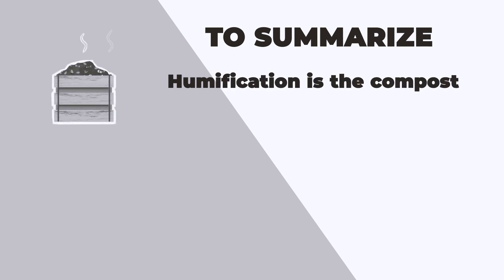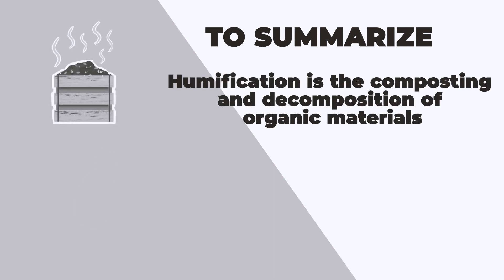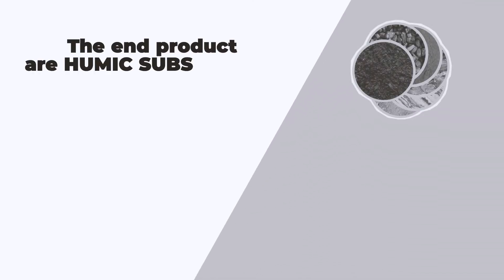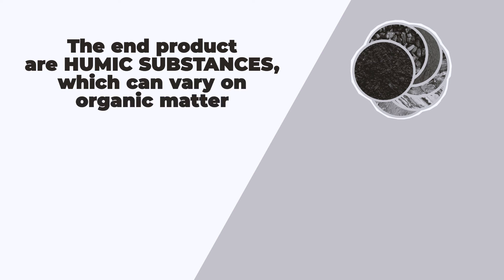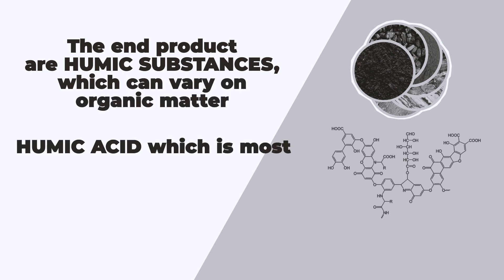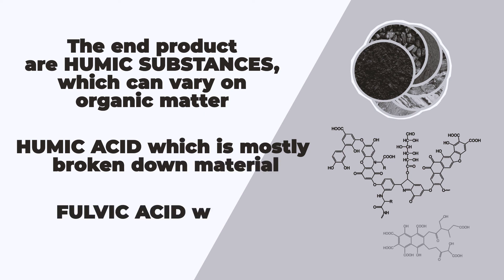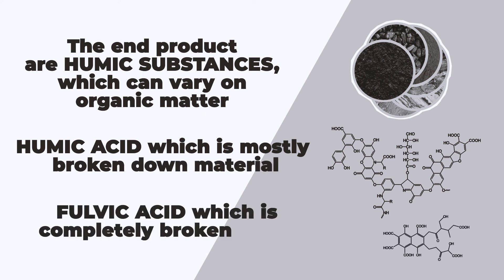To summarize, humification is the composting and decomposition of organic materials by microbes, heat, and time. The end products are humic substances, which can vary in their molecular composition, but are broadly considered humic acid, which is mostly broken-down material, and fulvic acid, which is completely broken down until it is stable.